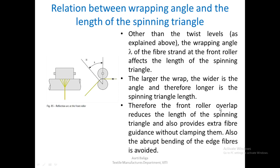The front roller overlap reduces the length of the spinning triangle. The front roller is given a slight overlap — it is shifted or tilted towards the front side of the drafting system — which reduces the length of the spinning triangle and also provides extra fiber guidance without clamping them. Also, the abrupt bending of the edge fibers is avoided when we give a front roller overlap.